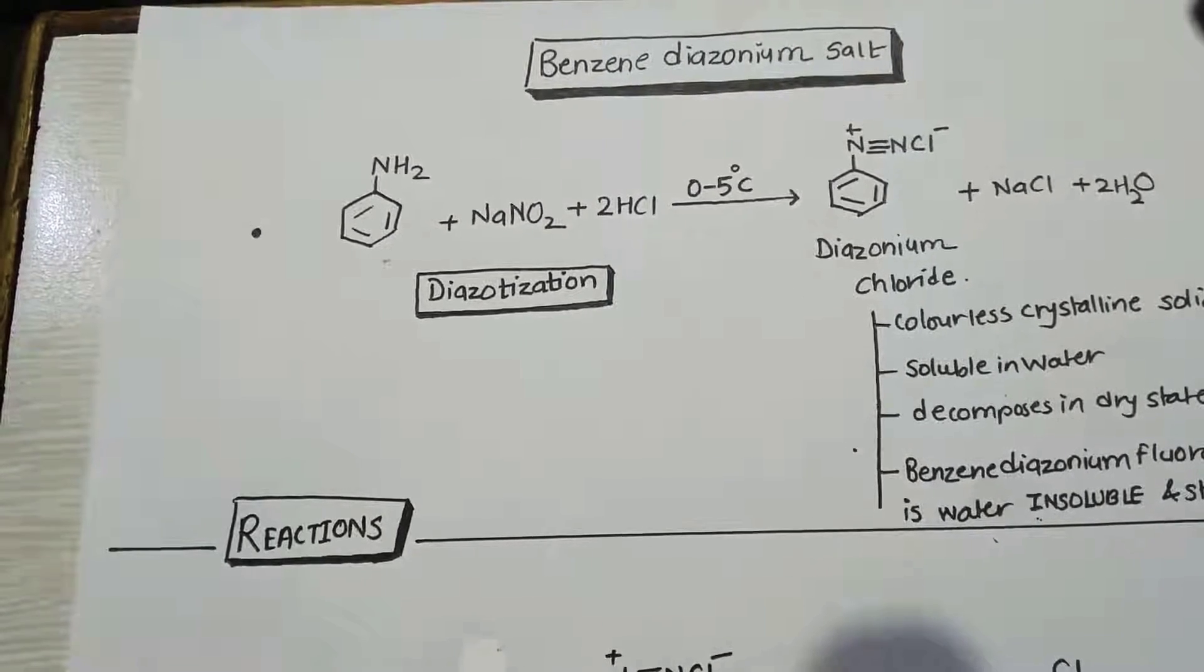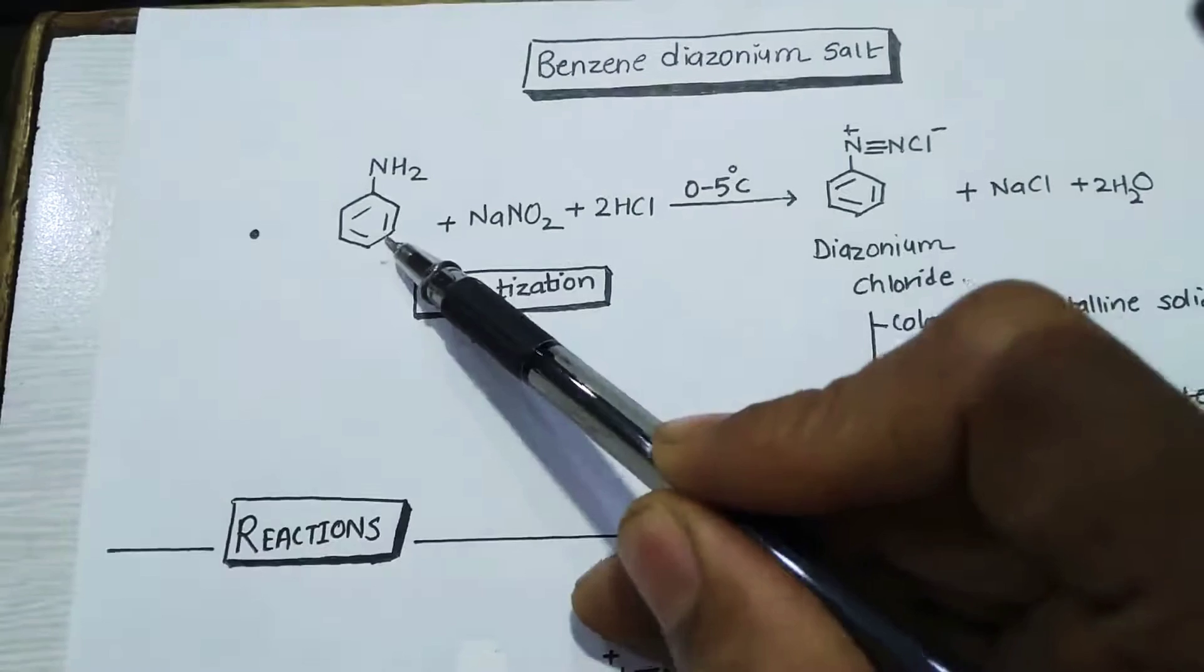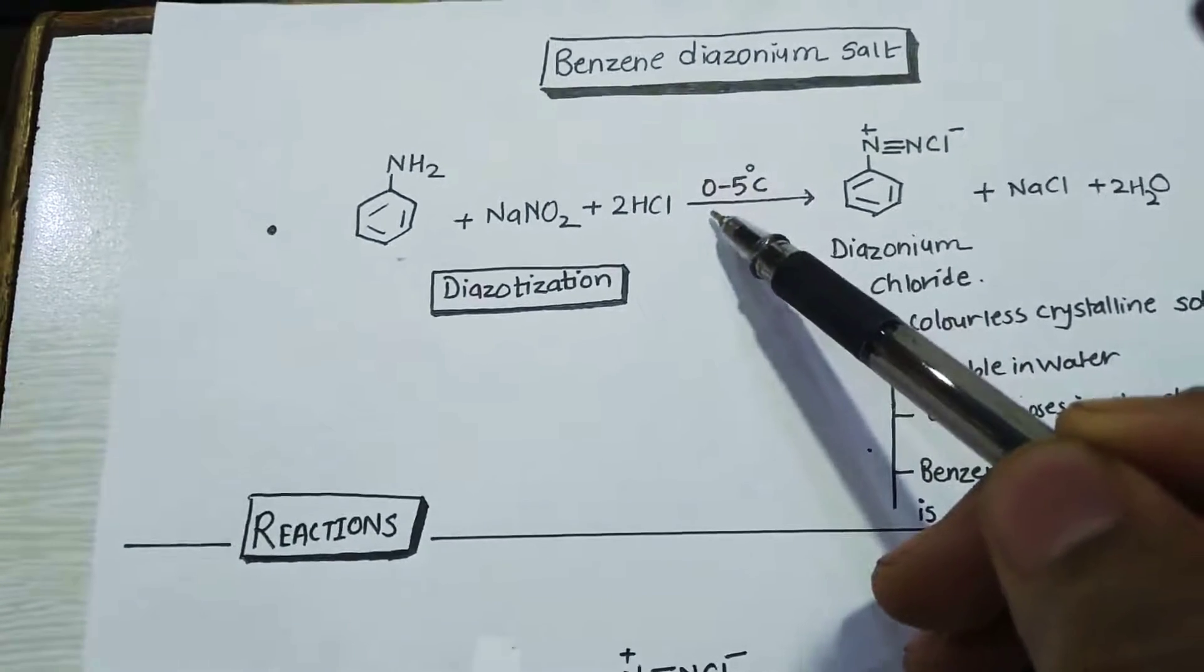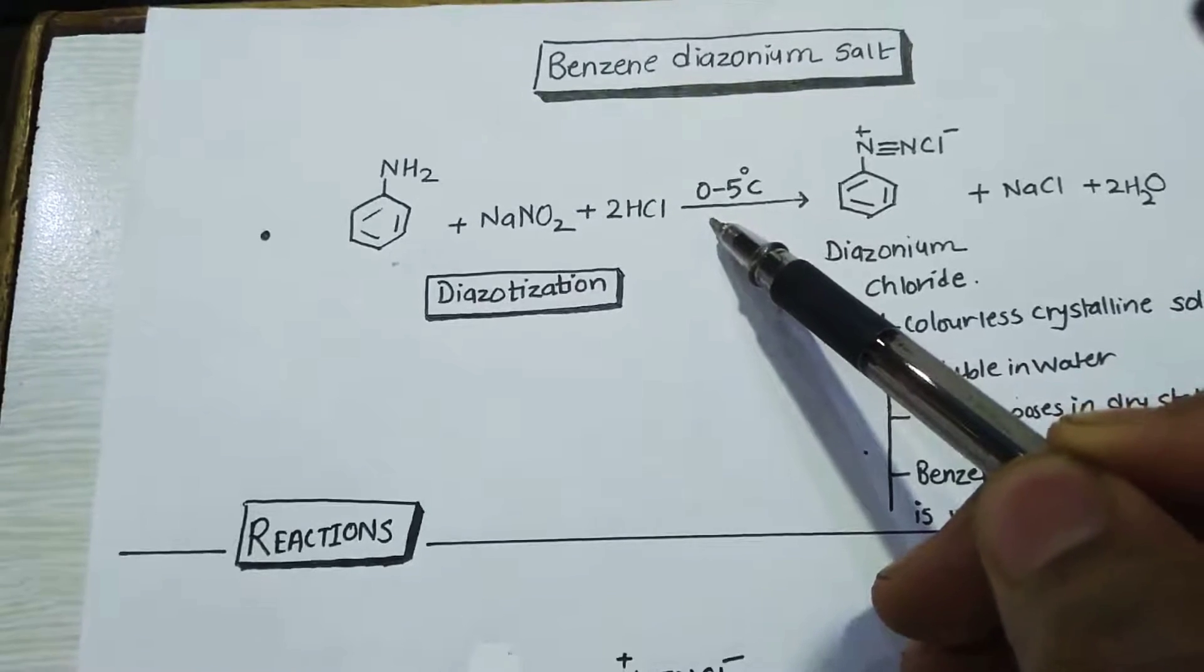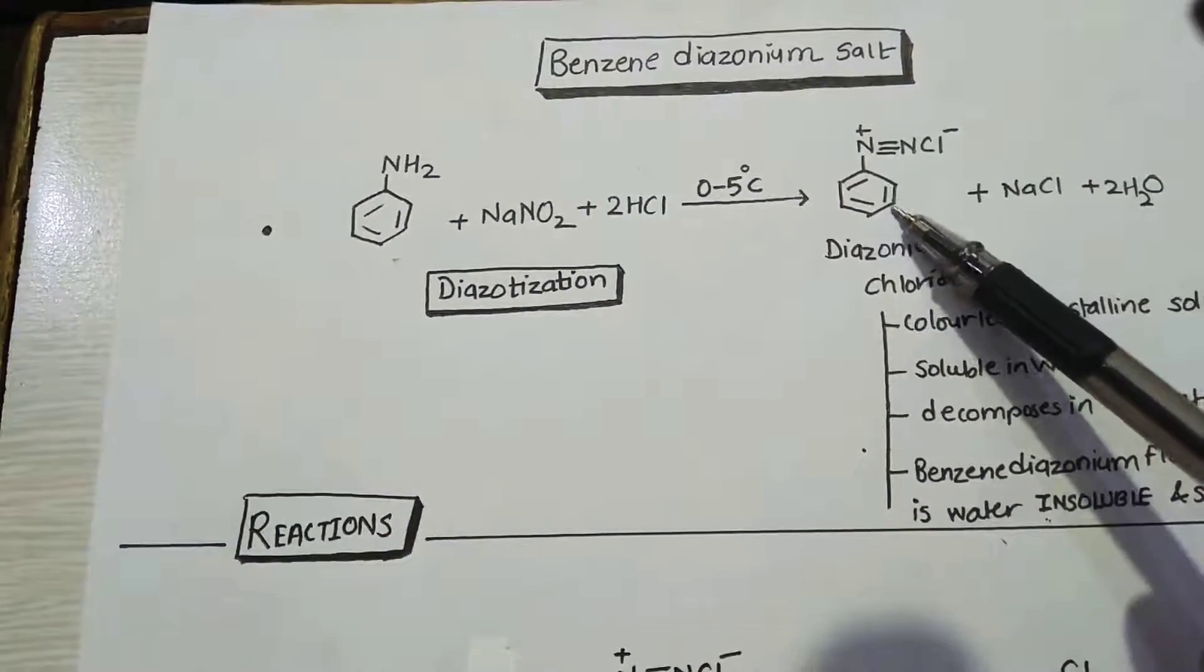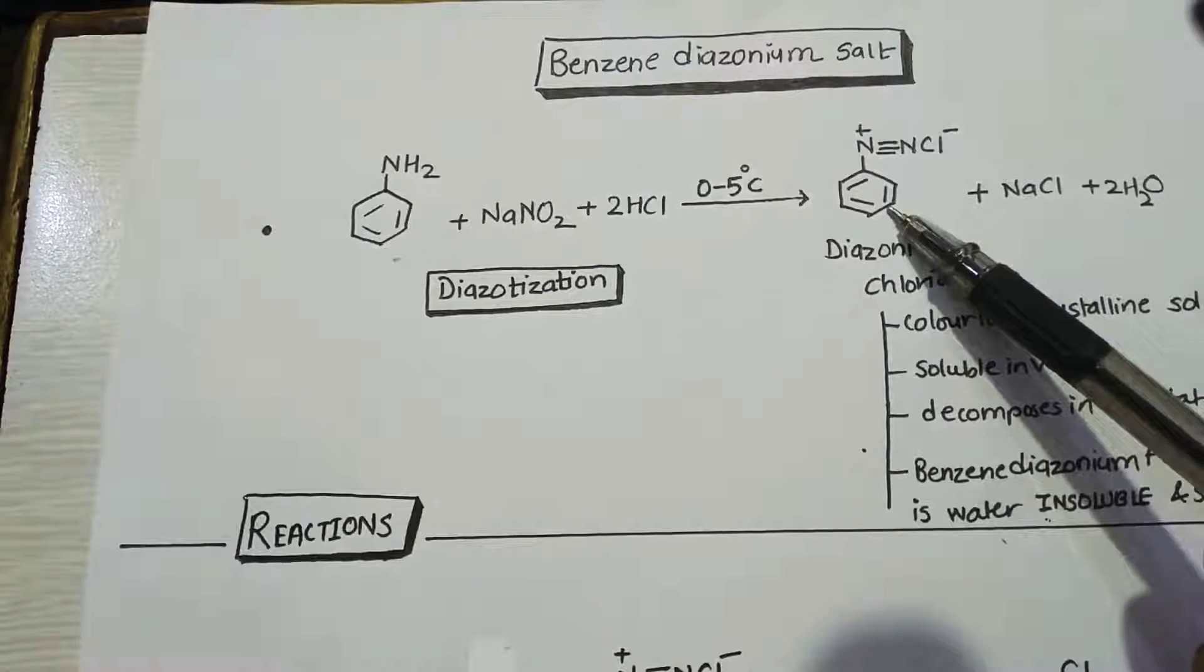Benzene diazonium salts. Now aniline, when it reacts with sodium nitrite and hydrochloric acid under cold conditions, that is 0 to 5 degrees Celsius, it will form benzene diazonium chloride. Benzene diazonium chloride will be stable for a short time.